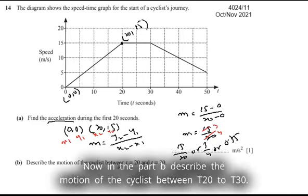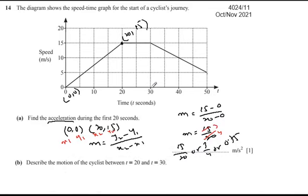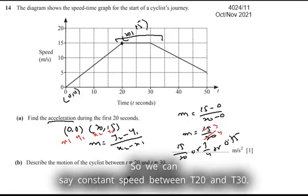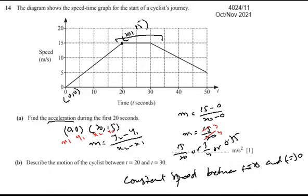Now in part (b), we describe the motion of the cyclist between t=20 to t=30. From t=20 to t=30, the speed is constant. So we can say constant speed between t=20 and t=30.